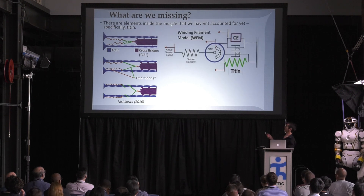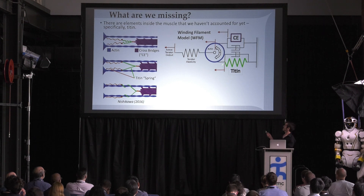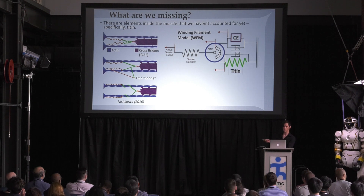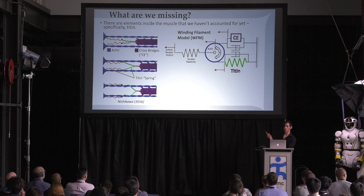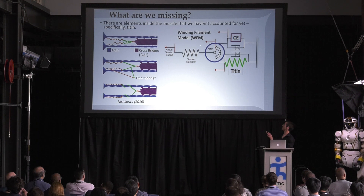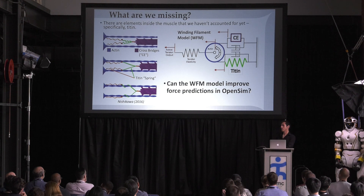A muscle model that I derived to explain this behavior — I'll call it the Winding Filament Model, or WFM for short — says that what is stretching this series spring and causing our simulated muscle force is the interaction between the contractile element and a tightened spring operating around a pulley that can rotate and translate in response to each of these forces.